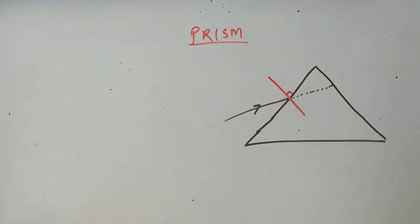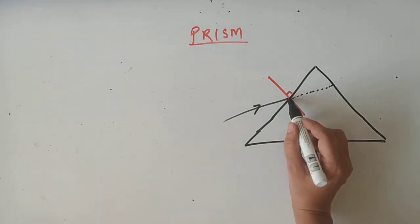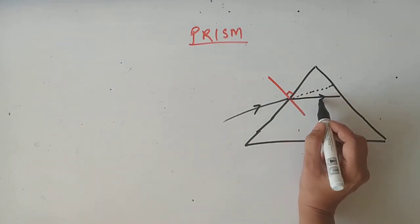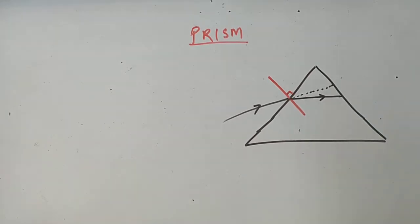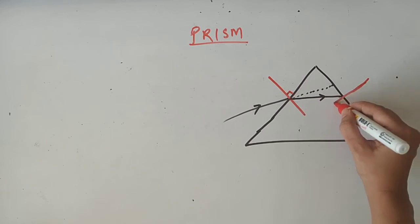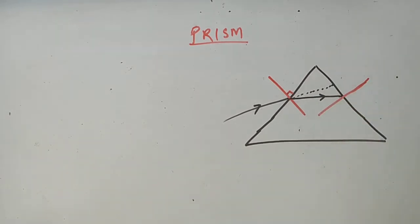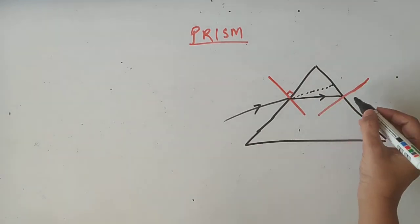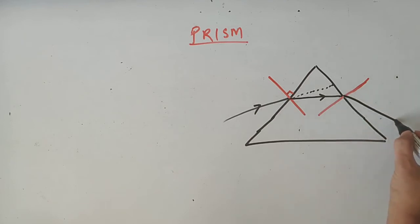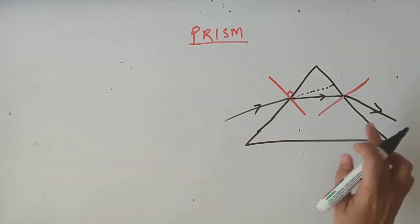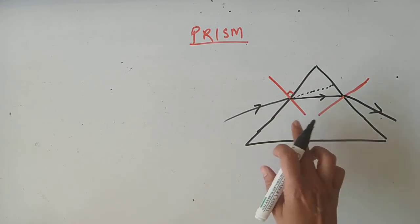So it will bend towards the normal, in the direction of the normal, and the light ray will come. Because the light ray is going from denser to rarer, glass slab is going from denser to rarer.